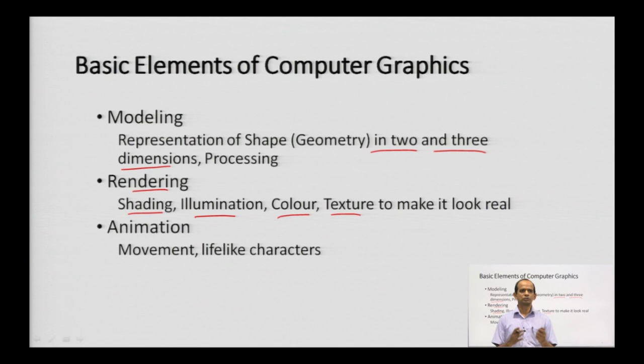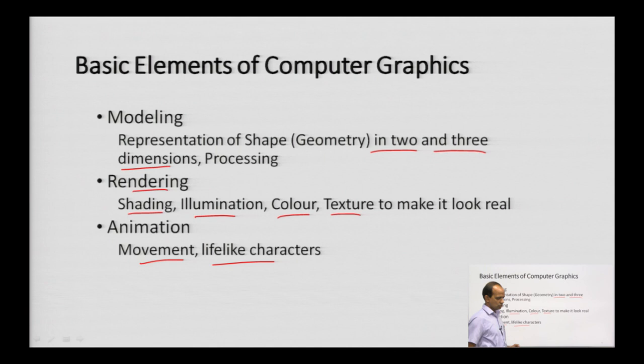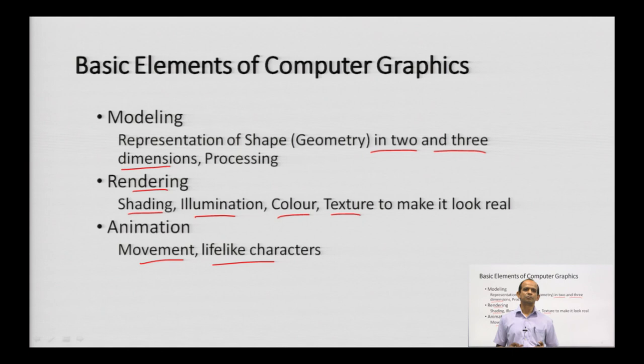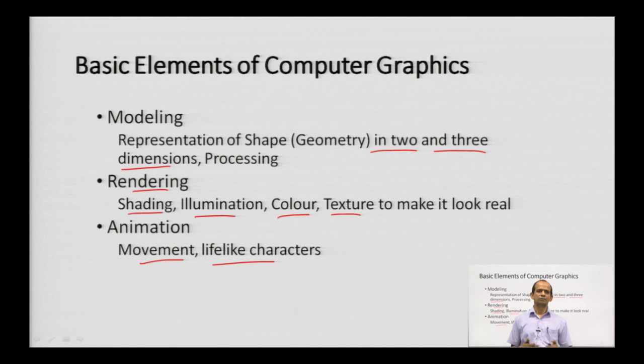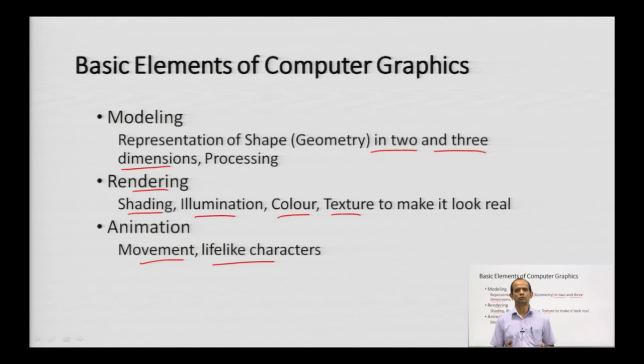Animation means providing movement or life-like character. For example, if you make a model of an IC engine and want to show how it works, you can use animation to make the piston run and the engine operate as a model. The actual mechanism can be communicated through movement. Earlier animation was only 2D, but now we have 3D animation as well.